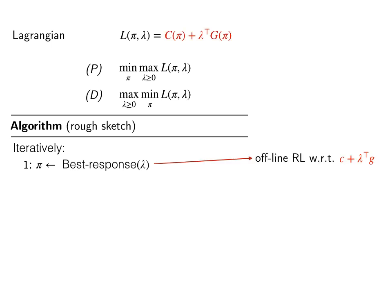Best response here means finding a policy that minimizes the Lagrangian given a fixed λ. And this is a batch reinforcement learning problem with respect to cost c plus λ times g. The techniques to solve this involve multiple reductions to supervised learning and there exist known techniques to solve these problems, such as fitted Q iteration or least squares policy iteration.